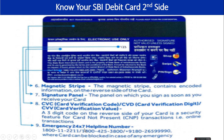There is also an emergency 24x7 helpline. There are phone numbers printed on the card for emergency help: 1800 1122 11, 1800 425 3800, 1902 6538 049, and 00 12 7080. This card can be blocked in case of any emergency.